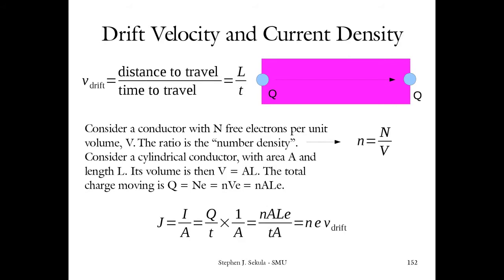What has been observed is that if you create a certain electric potential difference V across a material and measure the current moving through it in response, in a certain class of materials there is a direct linear relationship: if you double V, you double I; if you quadruple V, you quadruple I. That relationship is known as Ohm's Law, and the constant that relates these two things is resistance.